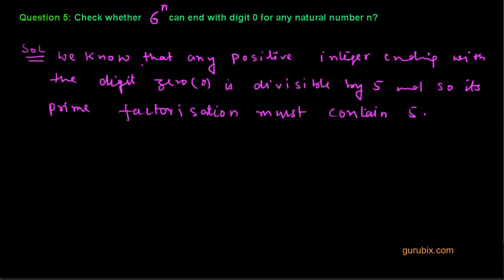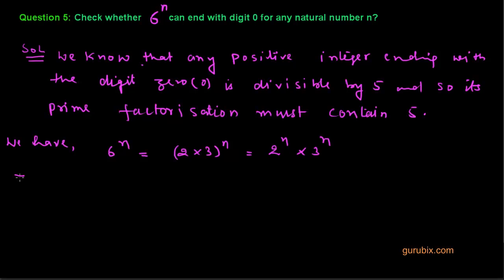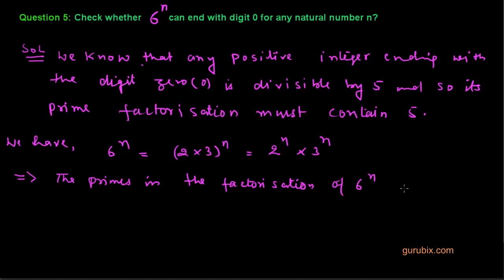Let us see what we have. We have 6 to the power n, which means 2 times 3 to the power n, which further means 2 to the power n multiplied by 3 to the power n. This implies that the primes in the factorization of 6 to the power n are only 2 and 3.